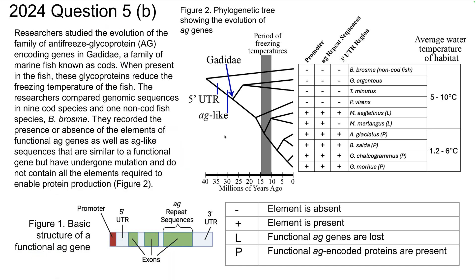Here's the rest of it. Researchers studied the evolution of the family of antifreeze glycoprotein, AG encoding genes, in Gadidae, a family of marine fish known as cods. When present in the fish, these glycoproteins reduced the freezing temperatures in the fish. The researchers compared genomic sequences in nine cod species and one non-cod fish species, B. brosmi, they recorded the presence or absence of the elements of functional AG genes, as well as AG-like sequences, that are similar to a functional gene, but have undergone mutation and do not contain all the elements required to enable protein production. That's in figure two.